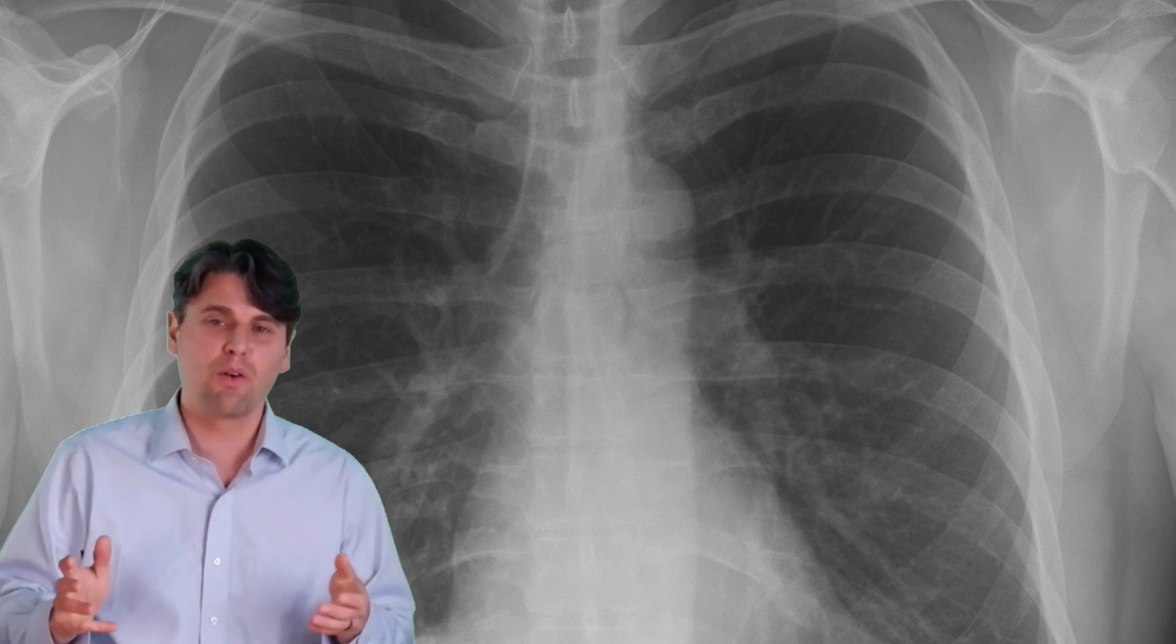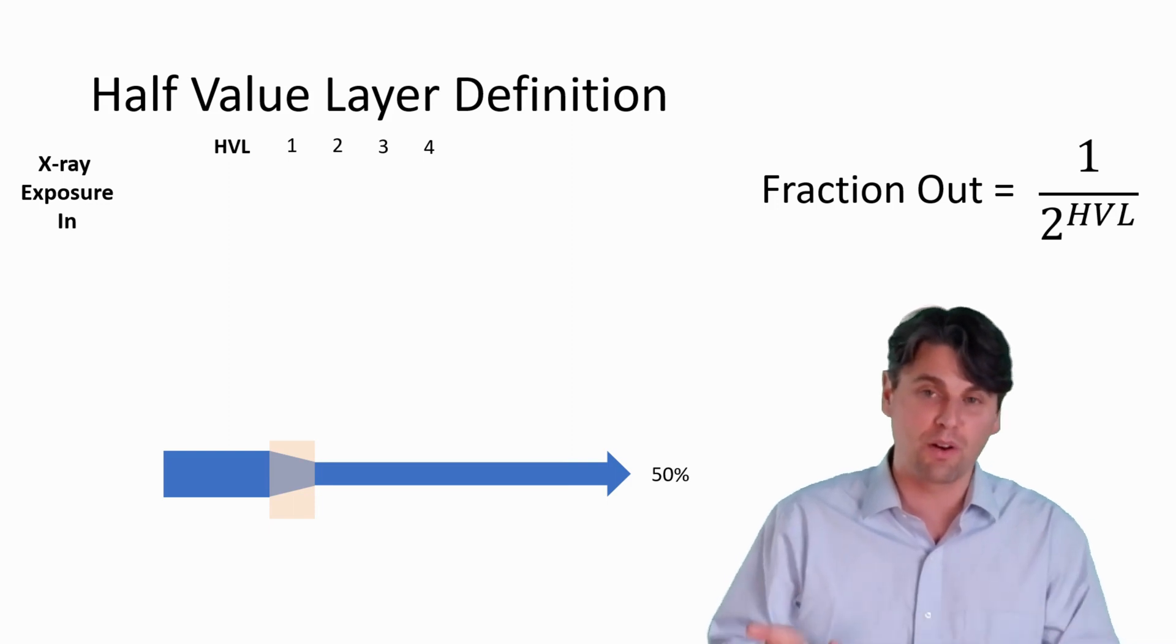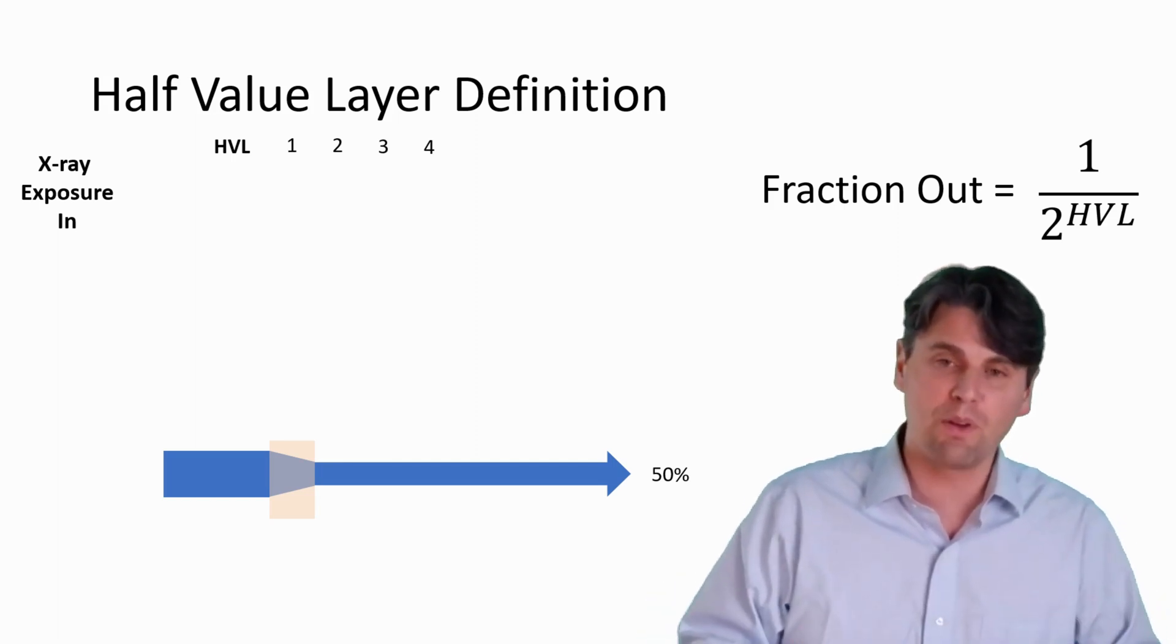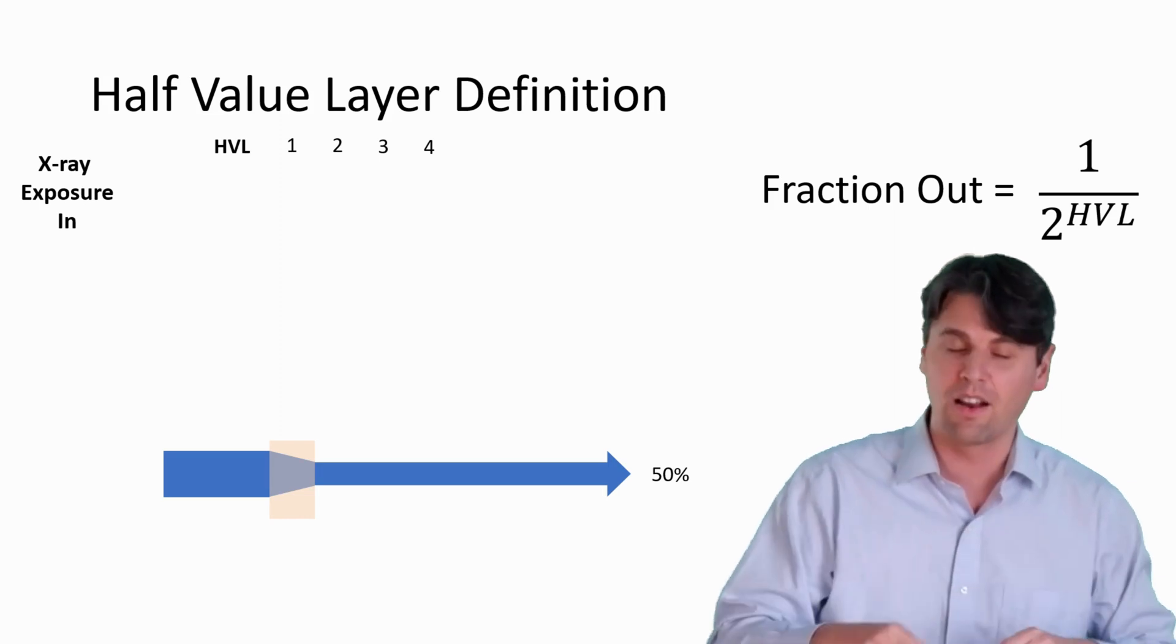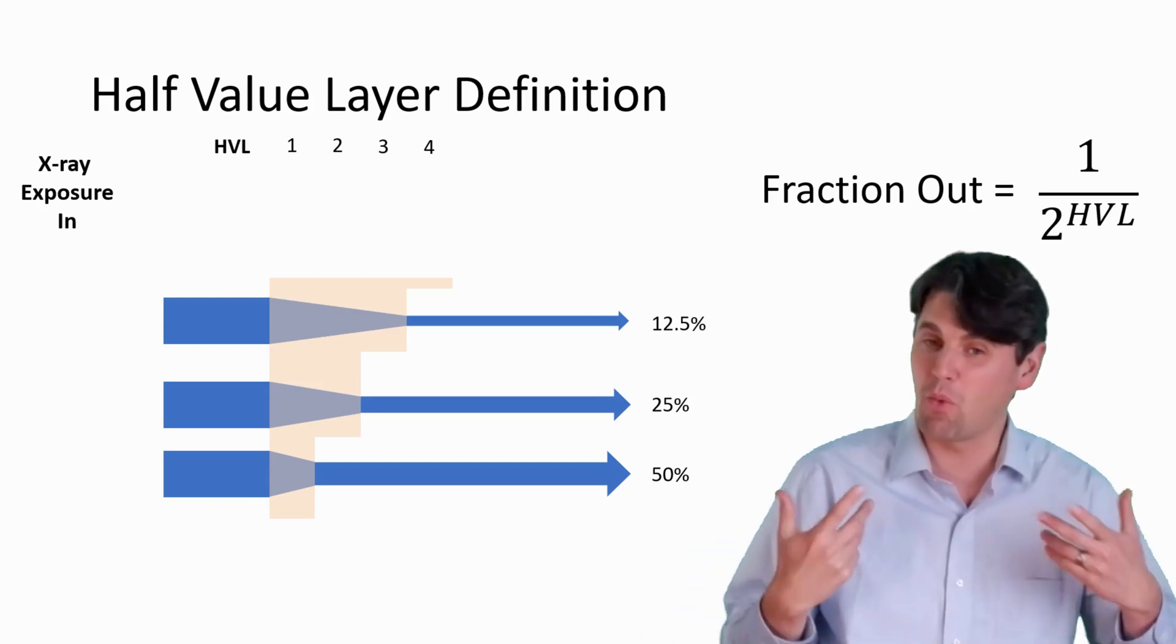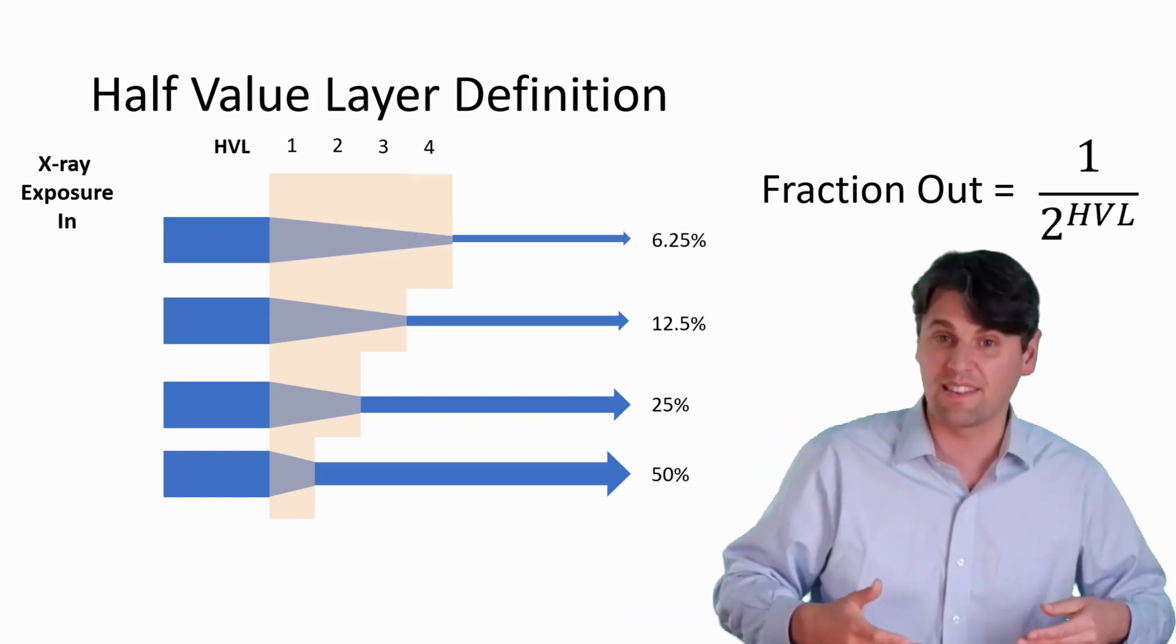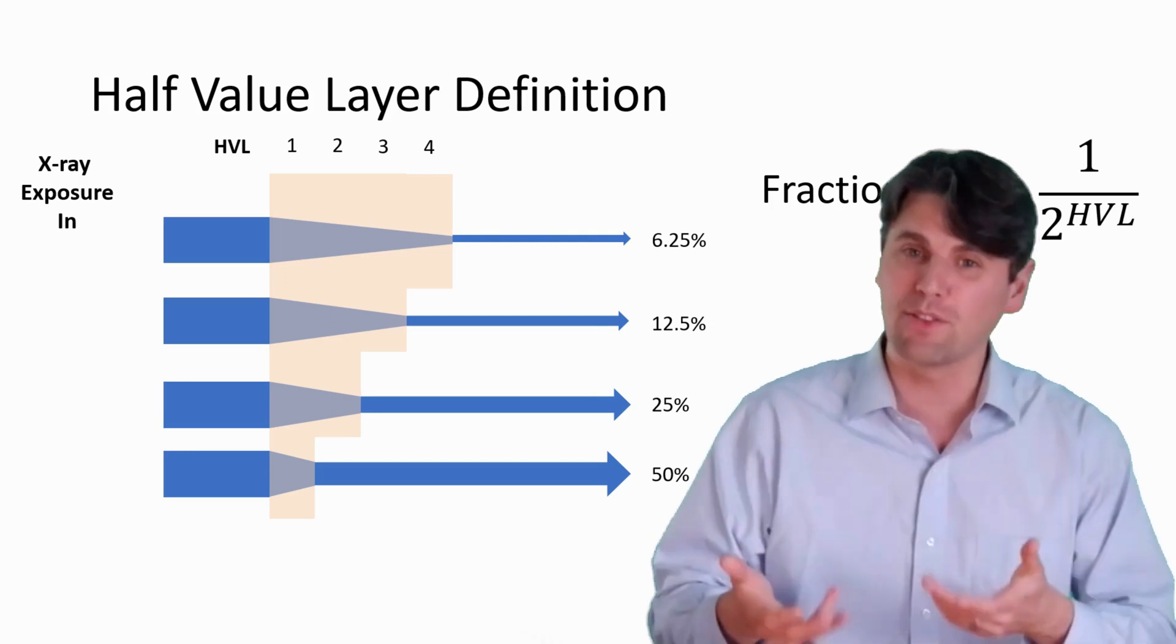Also talk about additional half values. So we measured a single half value layer in that experiment we were talking about. And the equation is the fraction of the x-rays or the exposure that we're going to measure is one divided by two raised to the power of the number of half value layers you're talking about. So each time you can think about taking one half and then multiplying it by another one half for each half value layer. So if you start with a single half value layer, you have one half of the x-rays making it through. Second half value layer, you take one half times one half, you get one quarter. Third half value layer, you multiply that one quarter by one half, you now get one eighth, so 12.5%. And then if you do a fourth time, you get one sixteenth or 6.25%. And that's the general idea for half value layers if you want to look at multiple half value layers.